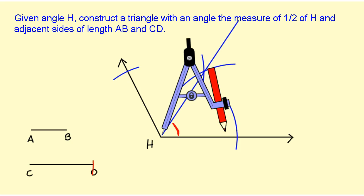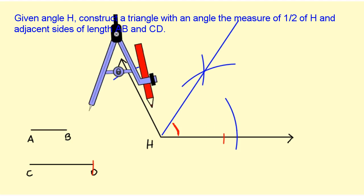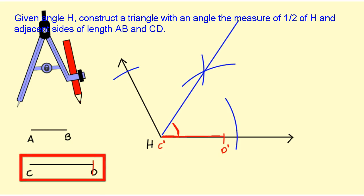I'm going to pick it up, put it on H, and copy CD over onto my drawing. This point would be like my C prime and this point would be my D prime, so this side right here has the length of CD.